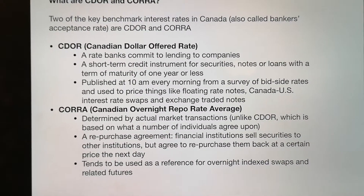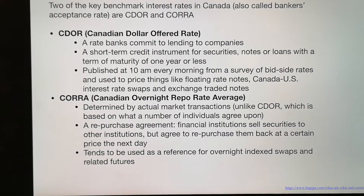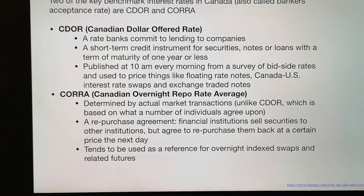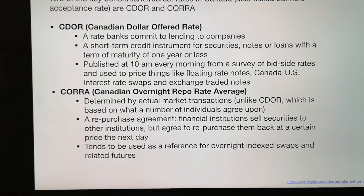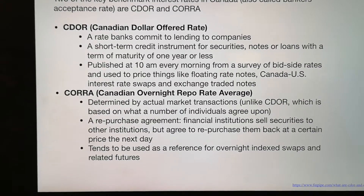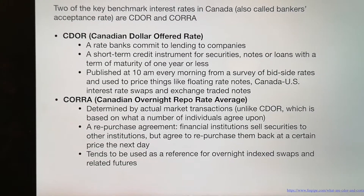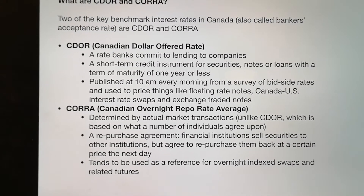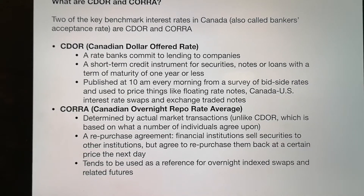The other one is the Canadian Overnight Repo Rate Average. It's determined by actual market transactions — unlike CDOR, which is based on what a number of individuals agreed upon. Repo means a repurchase agreement: financial institutions sell securities to other institutions but agree to repurchase them back at a certain price the next day. The trend is to use it as a reference for overnight index swaps and related futures.